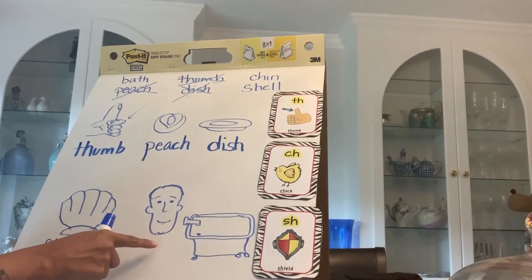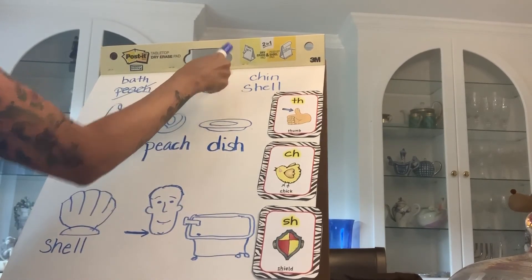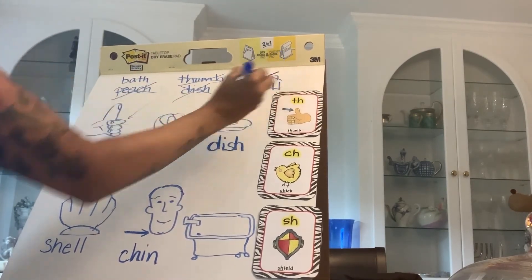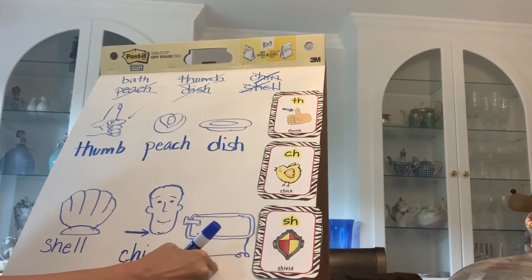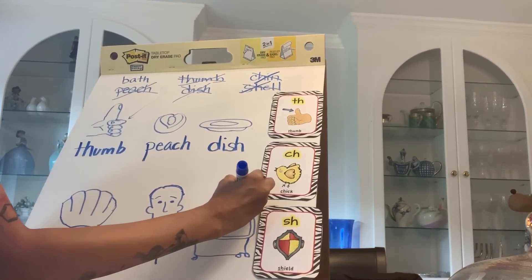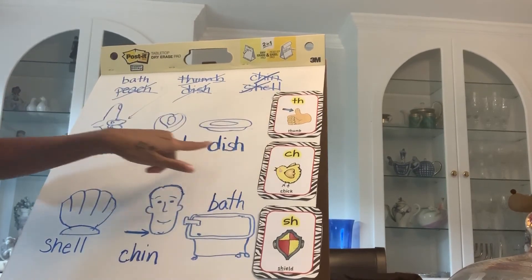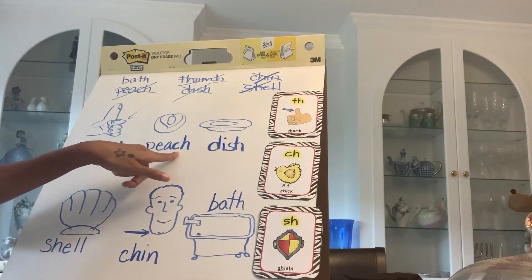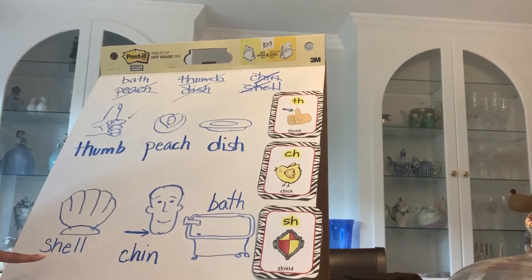The next picture has an arrow pointing to a man's face, and they're talking about his chin. Our word here is chin. And so that means our last word here is bath. I'm going to go ahead and write it up above it so you'll be able to see it in the video — bath. So as you can see, TH, SH, and CH can come either at the beginning of the word, as in thumb, or at the end of the word, as in bath. We see CH at the end in peach, and at the beginning in chin. And the SH sound at the end is dish, and at the beginning it's shell.